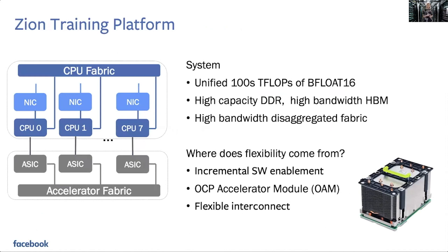Our training fabric is called Zion. This platform has a number of different networks — a compute fabric, a CPU fabric, and a separate accelerator fabric — to get the performance we need for training so that the model solves quickly. This Zion configuration offers an aggregate of hundreds of teraflops of bfloat16, terabytes of DDR for very large models, and hundreds of gigabytes of HBM for the parts of the model that need really fast access.